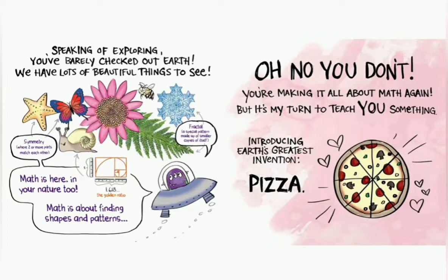Math is here in your nature too. Math is all about finding shapes and patterns. Symmetry, where there are two or more parts that match each other. Fractal, a special pattern made up of smaller copies of itself. Awesome. The golden ratio is for the shell of this beautiful snail.